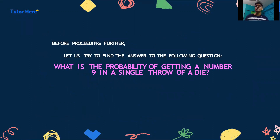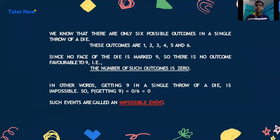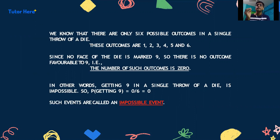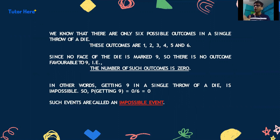Before proceeding further, let us try to find the answer to this question: What is the probability of getting the number 9 in a single throw of a die? As we know, there are only 6 possible outcomes — 1, 2, 3, 4, 5, and 6. Since no face of a die is marked 9, there is no outcome favourable to 9, meaning the number of favourable outcomes is 0. Getting 9 in a single throw is impossible. So P(getting 9) equals 0/6, which is 0. Such events are called impossible events.